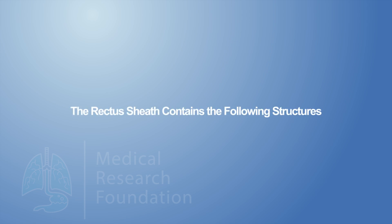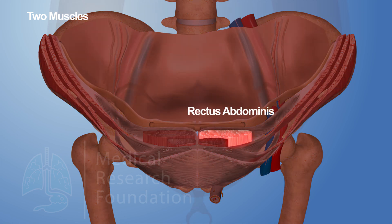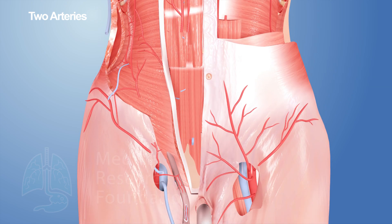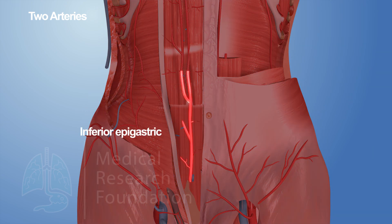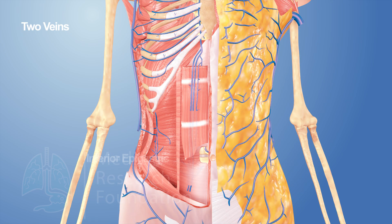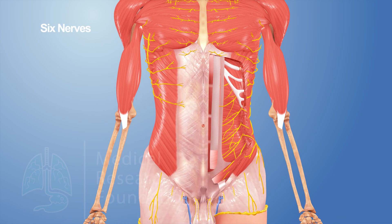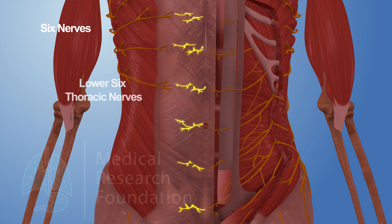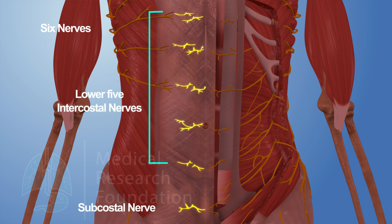Contents. The rectus sheath contains the following structures: two muscles — rectus abdominis and pyramidalis; two arteries — superior epigastric and inferior epigastric; two veins — superior epigastric and inferior epigastric; and six nerves — the terminal parts of the lower six thoracic nerves, including the lower five intercostal nerves and the subcostal nerve.